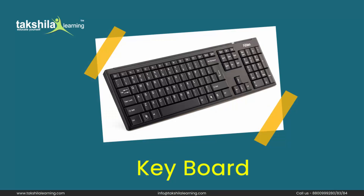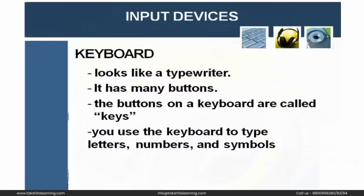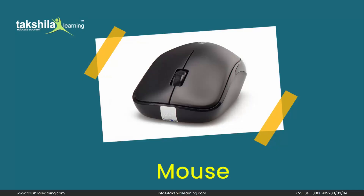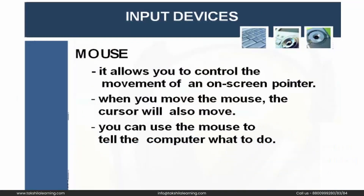The keyboard looks like a typewriter. It helps us in typing alphabets and has many buttons called keys. You use the keyboard to type letters, numbers, and symbols. Mouse is also an input device — it allows you to control the movement of the on-screen pointer. When you move the mouse, the cursor moves from one place to another. You can use the mouse to click on a particular file, folder, or icon.